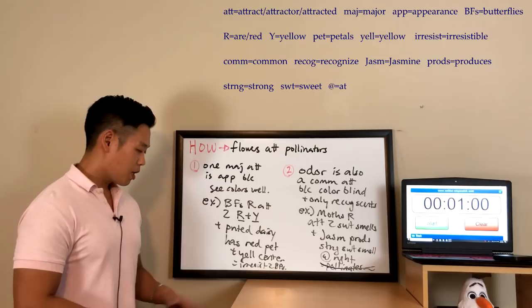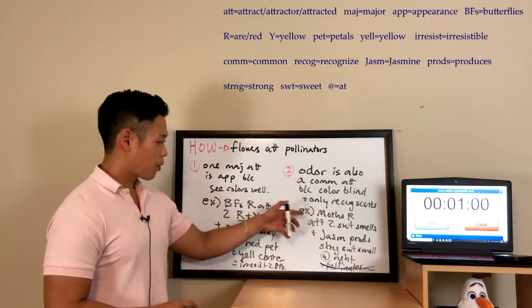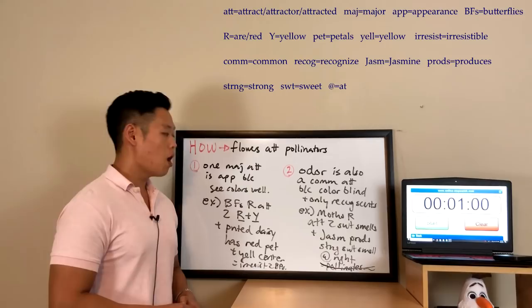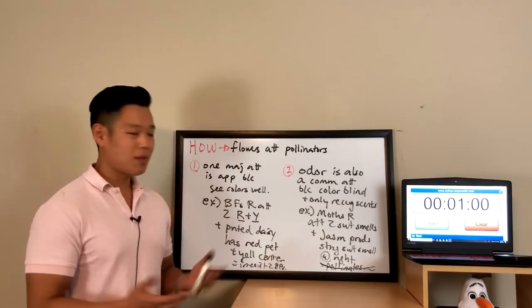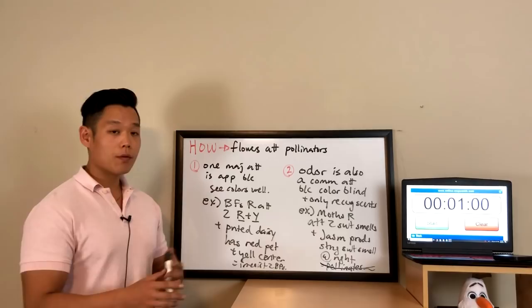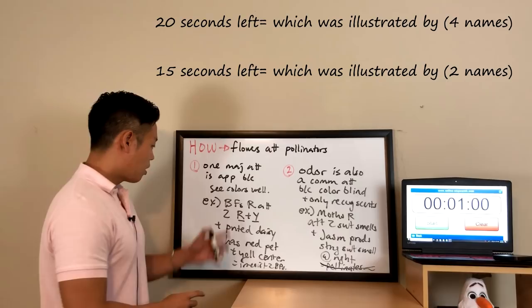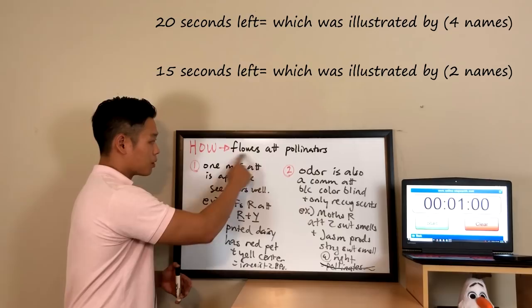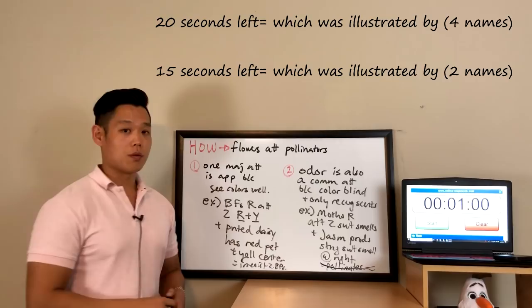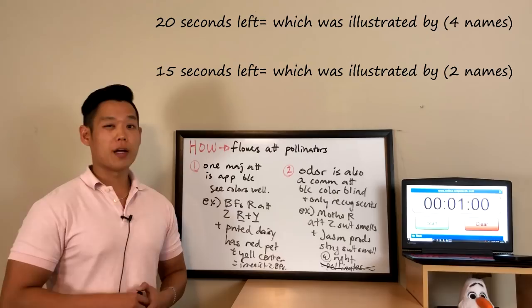The second section: odor is also a common attractor because some insects are colorblind and only recognize scents; for example, moths are attracted to sweet smells and the jasmine produces a strong sweet smell only at night. If I happen to have around 15 seconds left after summarizing, I have the freedom to say all four names in the ending: butterflies, the painted daisy, moths, and the jasmine. But if I only have about 15 seconds, I'll just say the flowers. It's based entirely on how many seconds I actually have left.